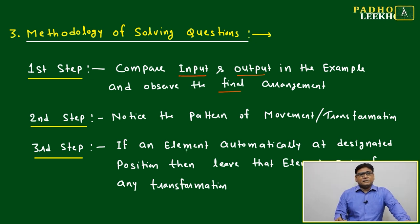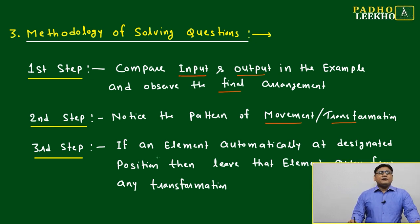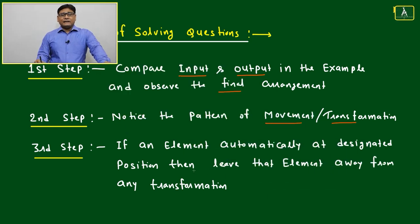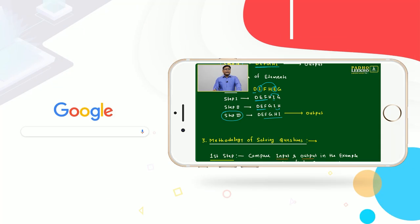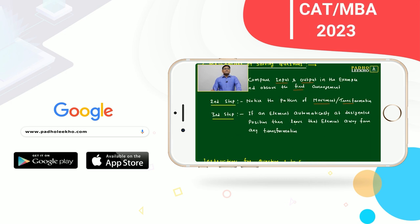Second step: notice the pattern of movement and transformation. You must notice the pattern. If an element is automatically at designated position, like we have seen D was already in the designated position, then leave it as it is without any transformation.